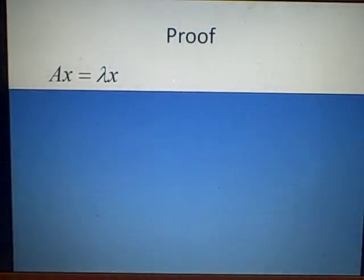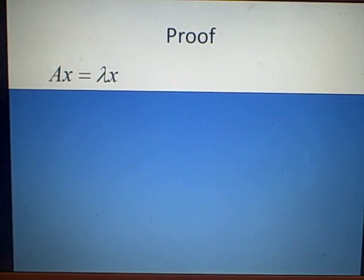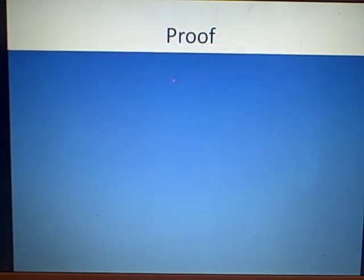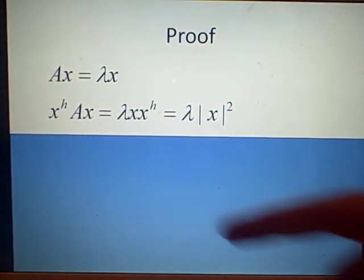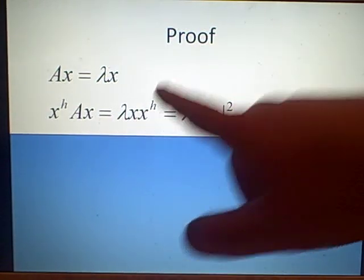Right, now we're going to prove that the eigenvalues are always real. So for each eigenvalue, lambda, we've got an eigenvector, x. And what we're going to do first is we're going to multiply both sides by x to the H, so the Hermitian thing.